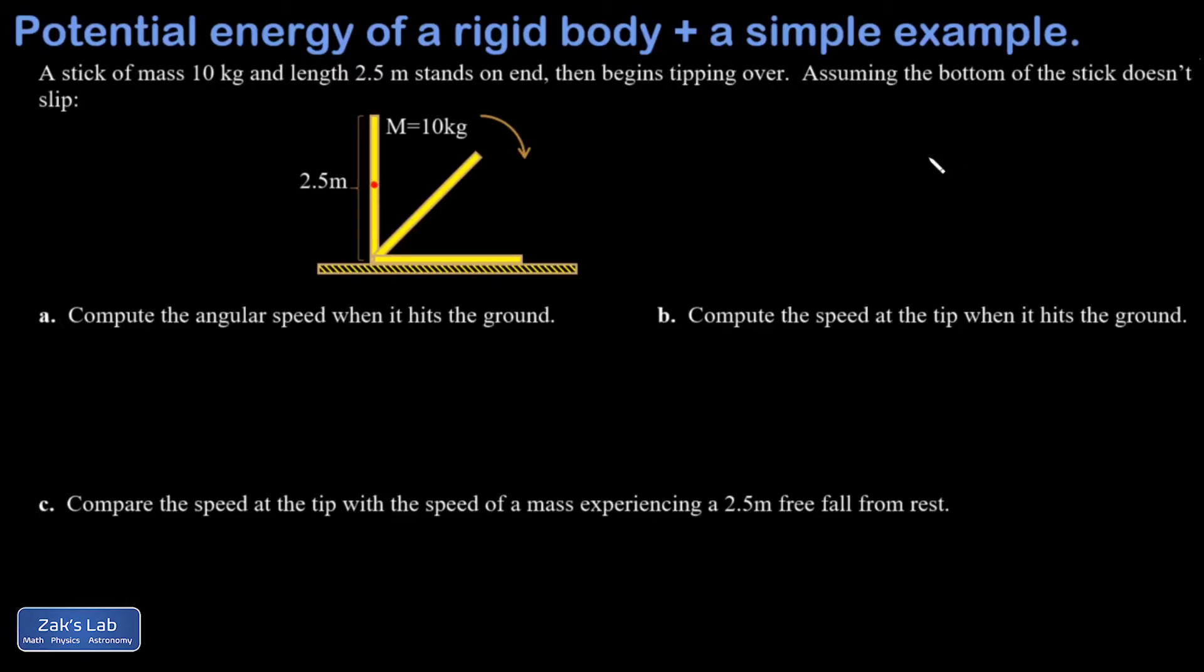So, if it was a very smooth surface, the bottom would actually start to slip out under this thing. So I had to say, let's assume that doesn't happen. And that puts us in pure rotation, which makes the problem easier to analyze. So we're rotating about this axis right here. How are we going to approach this thing?